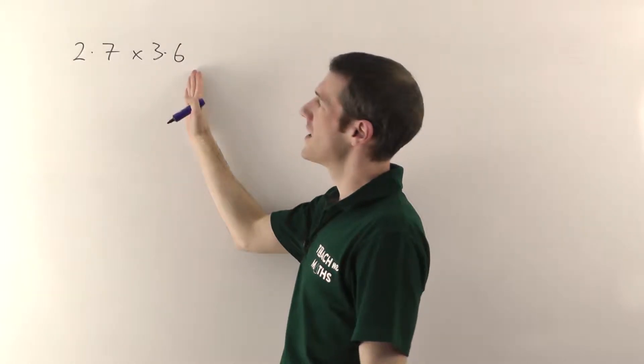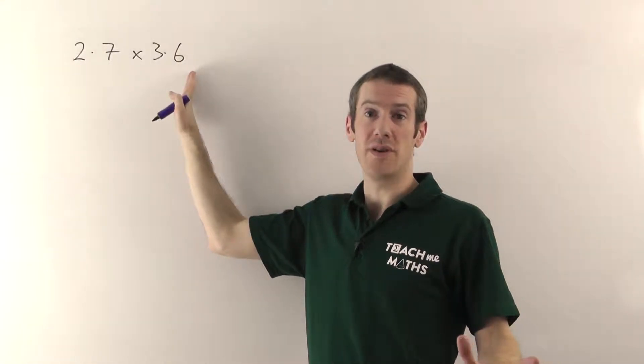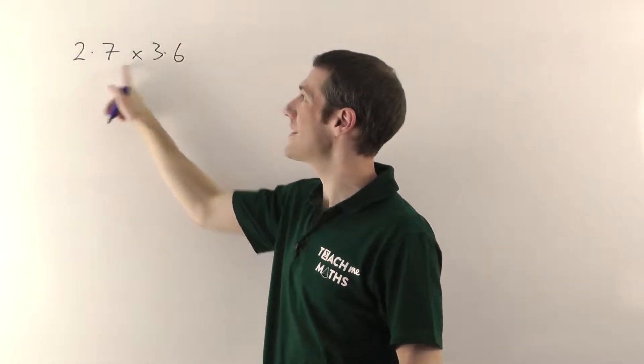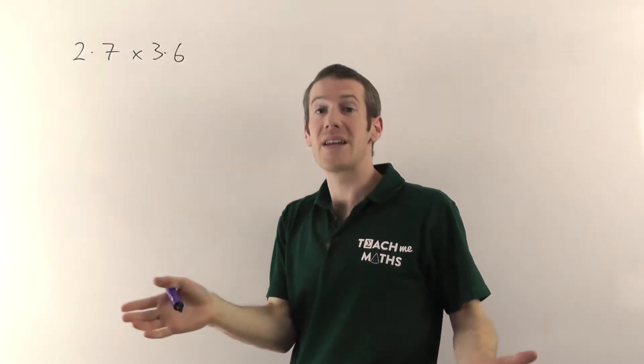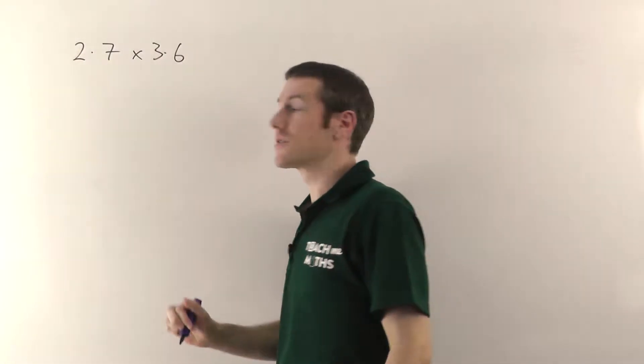The key thing is here, just ignore all the decimal points. Pretend they're not there. So we're going to do 27 times 36 by any means you like. As I say, I'm going to use the grid method.